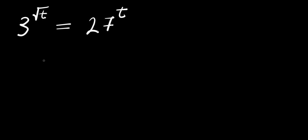Hello. How to solve this exponential problem: we have 3 to the power of square root t, and this equals 27 power t. We are solving for all values of t that satisfy this equation.